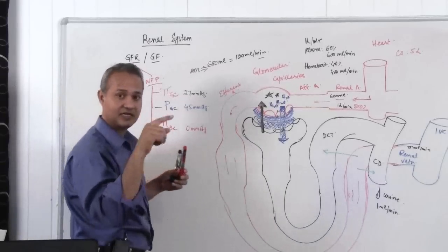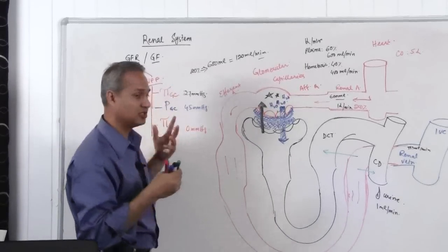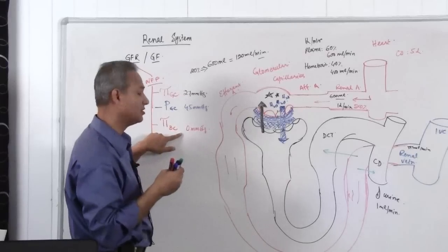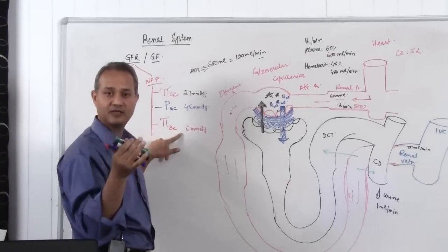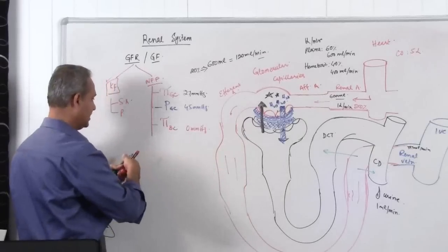So remember I said in the early part of the lecture, out of these 4, there would just be 3 which are important. So this one is out. Why this is out? In a healthy physiological condition, this does not exist. Proteins are not in the Bowman space.